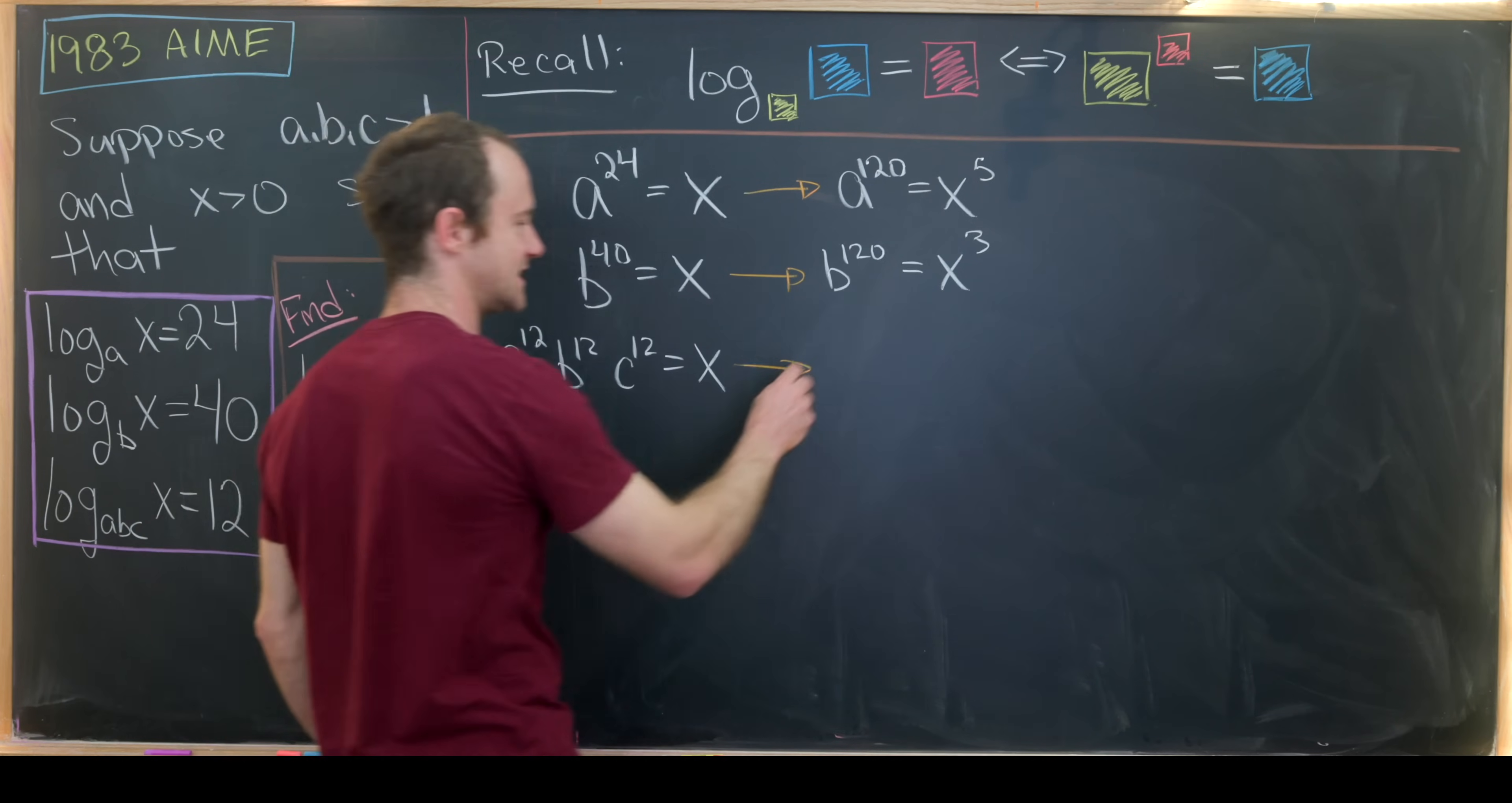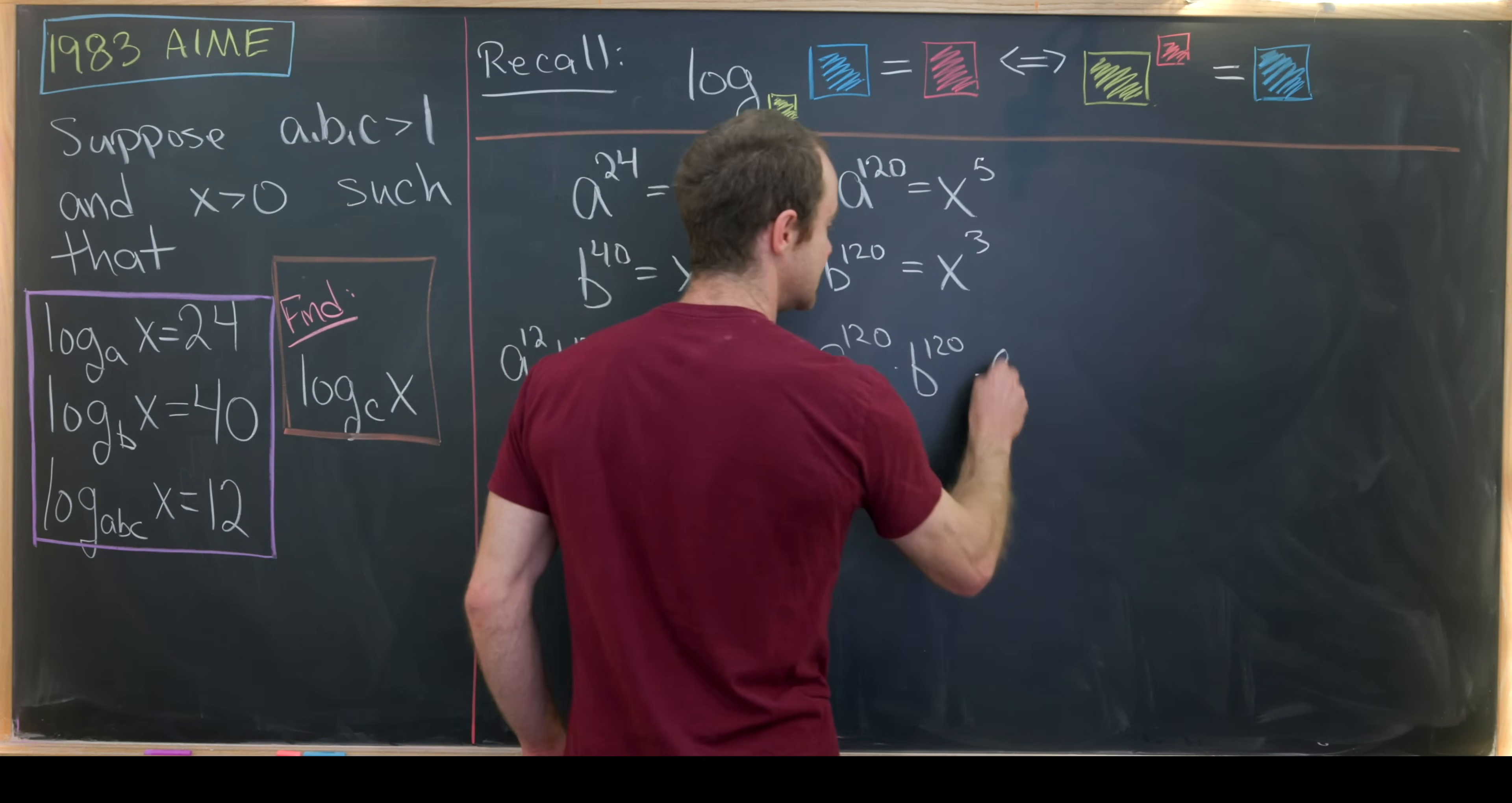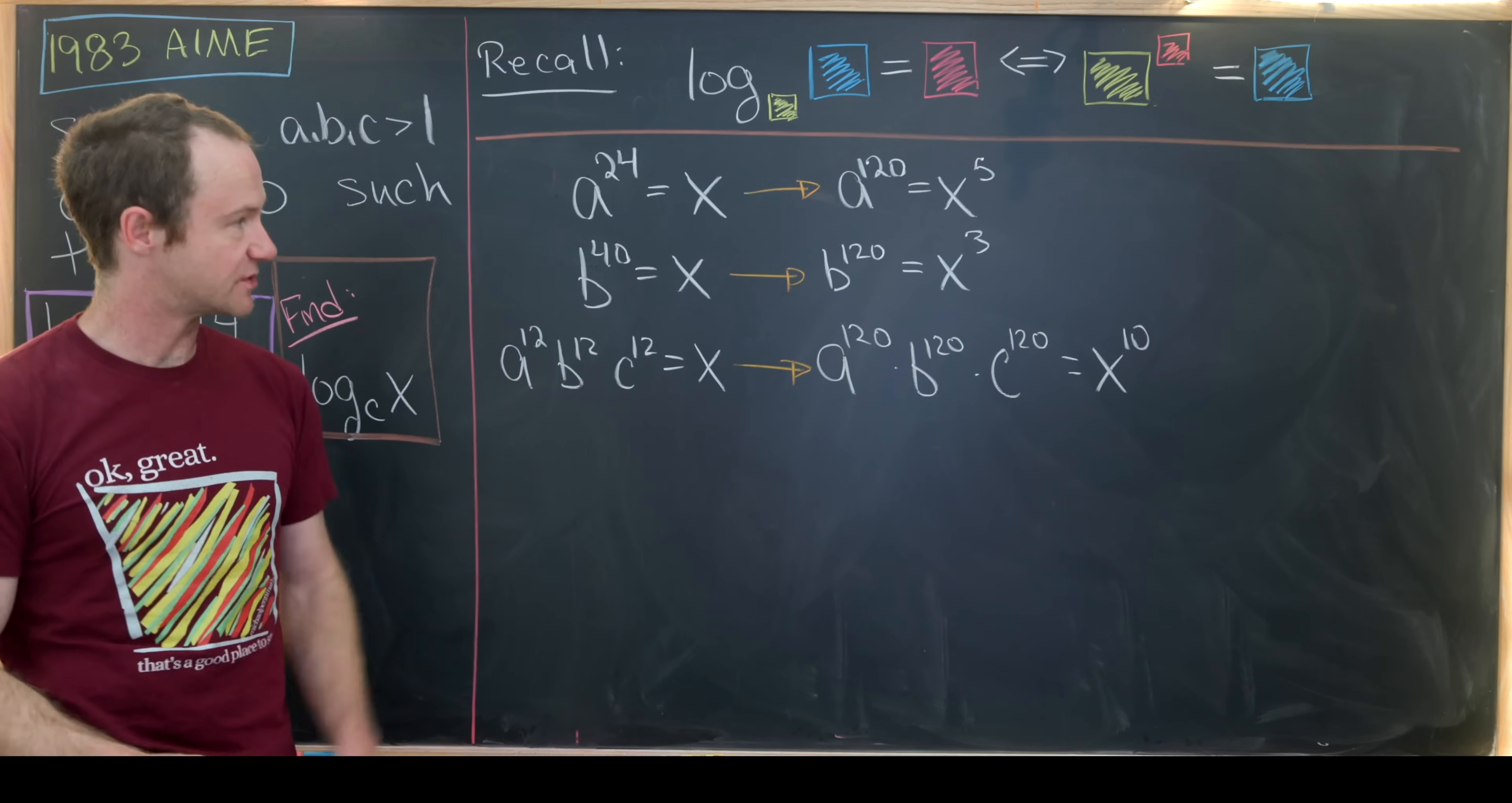Then finally, we'll raise this to the 10, so we'll have A to the 120 times B to the 120 times C to the 120 equals X to the 10. Okay, so that's good.